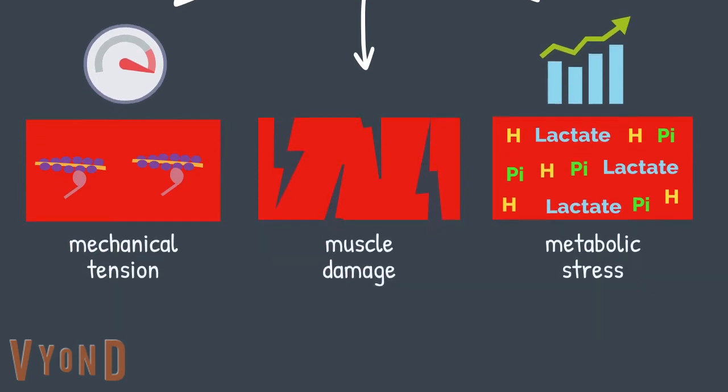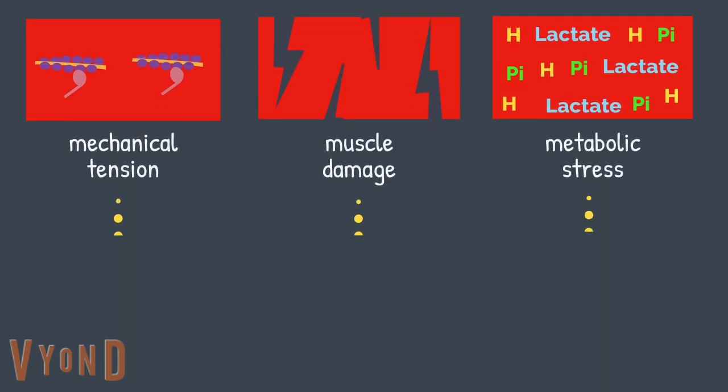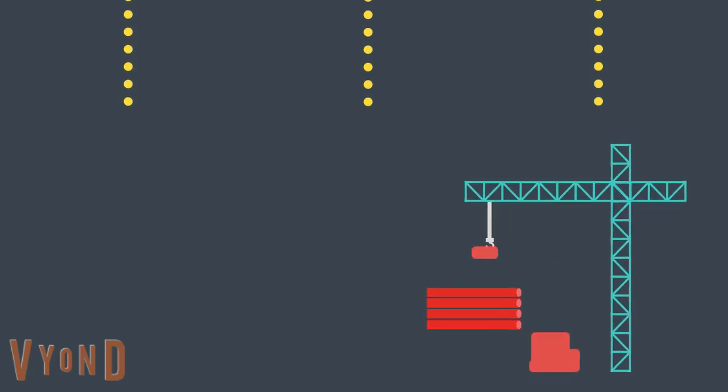These stimuli are detected by our muscle fibers and in turn activate molecular signaling pathways that increase the rate of protein synthesis. This results in an accumulation of protein inside the individual muscle fiber,